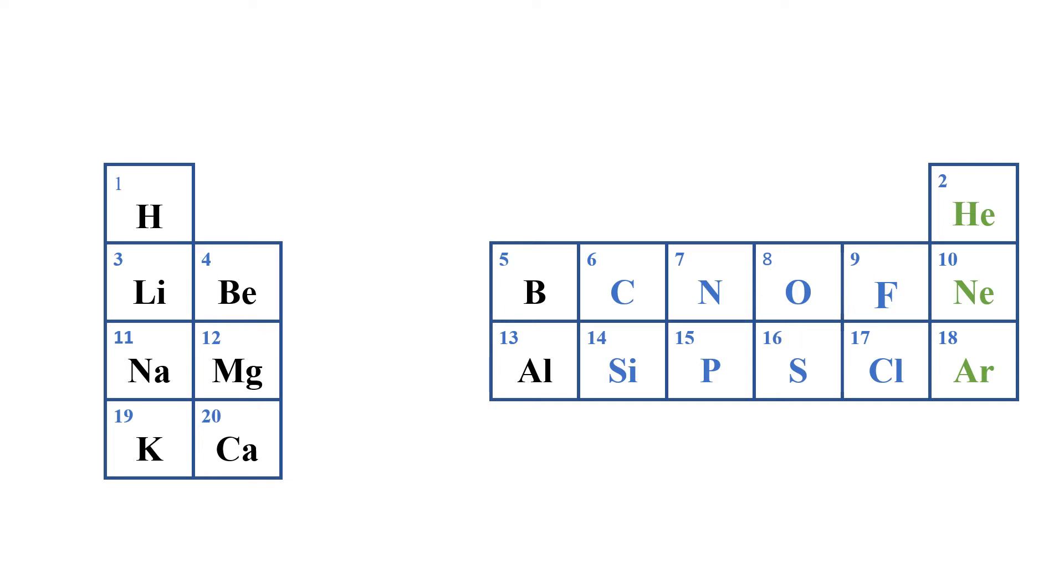When you look at the top left corner of each of these square boxes, you realize that we have what I will call the atomic numbers. For example, hydrogen has atomic number 1, helium 2, lithium 3, and so on up to 20. That's why we say that the periodic table is arranged in order of increasing atomic numbers.